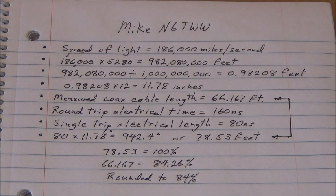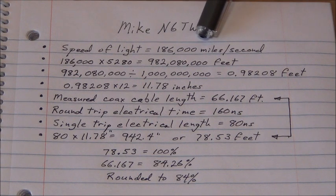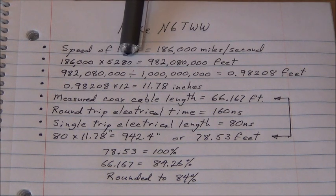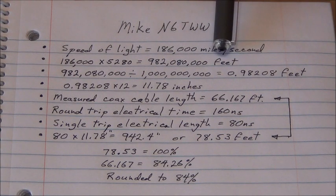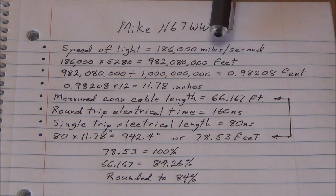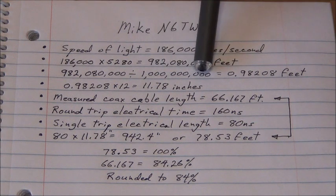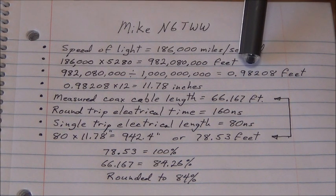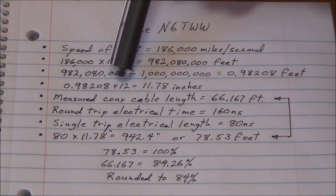Before we go on, I'm going to explain those measurements on the scope a little bit more so that you can understand it. The speed of light is 186,000 miles per second. If we break that down to feet, we can multiply it times 5,280 feet per mile, which gives us 982,080,000 feet per second. If we took that length and divided it by one billion—because we want to get it down into the nanoseconds, one billionth of a second—it comes out to 0.98208 feet. And 0.98208 times 12 to give us inches is 11.78 inches.